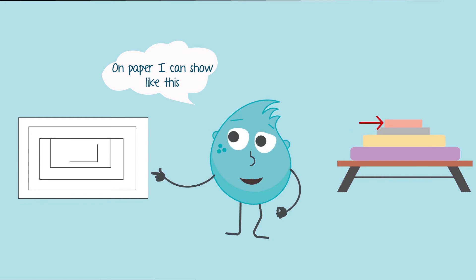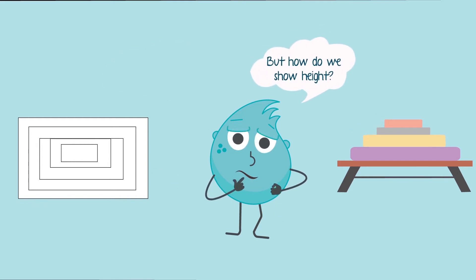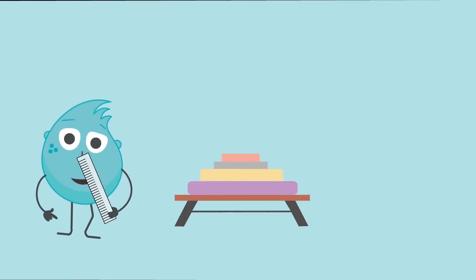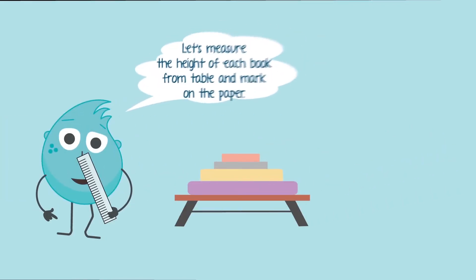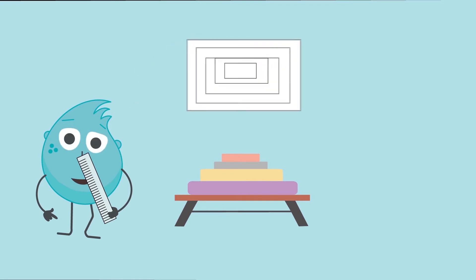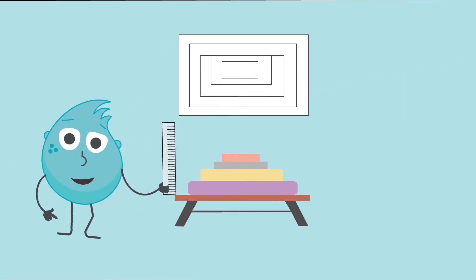So we need to draw four concentric rectangles. But we also need to show the heights of the books so that the person who looks at the picture understands it in detail. Next, we can measure the height of all the books and mark on paper. Let's mark the top of the table as zero.